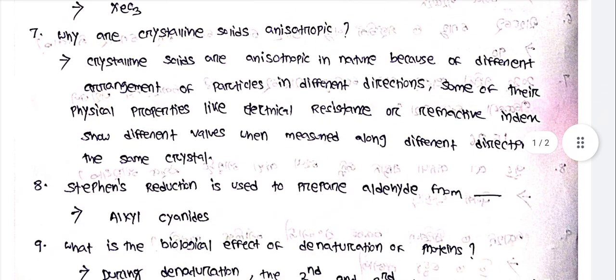Why are crystalline solids anisotropic? Crystalline solids are anisotropic in nature because of the different arrangement of particles in different directions. Some of their physical properties, like electrical resistance or refractive index, show different values when measured along different directions in the same crystal.